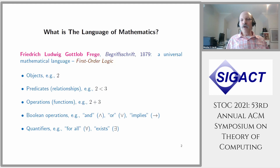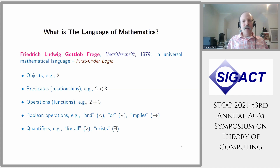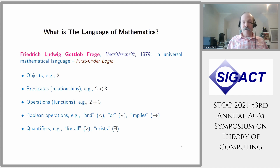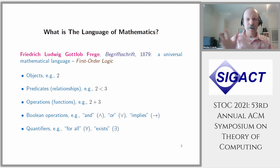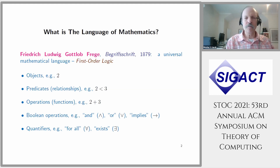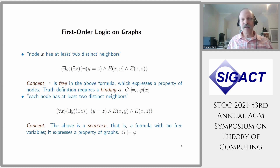In Begriffsschrift, Frege introduced for the first time what he considered to be the language of mathematics. The question addressed in the book is: what is the language of mathematics? Frege says all mathematical discourse is about mathematical objects — numbers, relationships between them, predicates, operations on them, boolean operations (what people thought of as logic for over 2000 years) — but also the new discoveries of the 19th century: quantifiers 'for all' and 'there exists.' The term first-order logic emerged later in the 20th century.